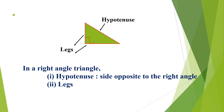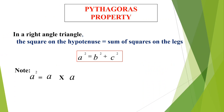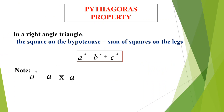The side opposite to the right angle is named hypotenuse; remaining two sides are legs. Hypotenuse is the longest side compared with the remaining two sides — it has the highest measurement. Now we are moving to the Pythagoras property.